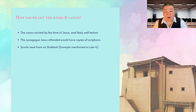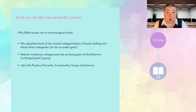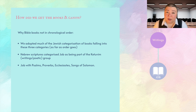Our Bibles today don't order all the books according to historical chronological order because we adopted much of the Jewish categorization of books falling into three categories. So Job, although one of the oldest historical events in the Bible, isn't near the beginning of a modern Christian Bible because Hebrew scriptures categorize it as part of the Ketuvim group — the other writings, also called the poetic books. That's why if you open your English Bible, you'll find Job placed alongside Psalms, Proverbs, Ecclesiastes, and Songs of Solomon.